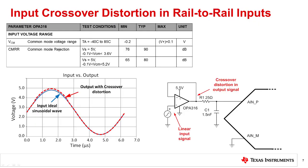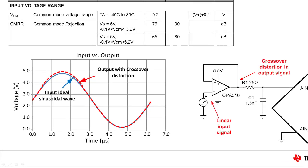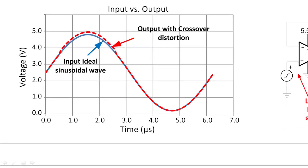In an earlier example, we saw how a rail-to-rail amplifier can be used to avoid common mode limitations. However, not all rail-to-rail amplifiers are created equal. Some rail-to-rail amplifiers have a limitation or error source called input crossover distortion. Input crossover distortion causes the offset voltage of an amplifier to jump when the common mode voltage crosses a certain threshold. In this example, you can see the input signal shown in blue and the output signal shown in red. The two signals track each other closely until the input common mode crosses a threshold where the offset changes, causing the output signal to shift.